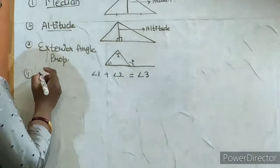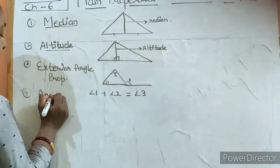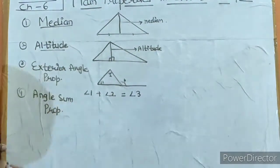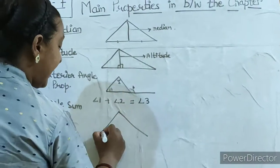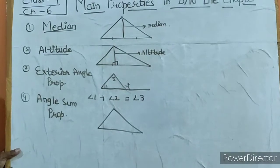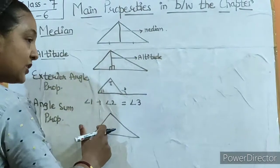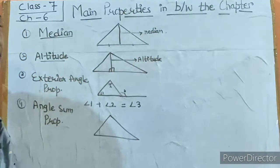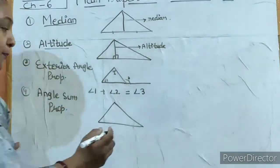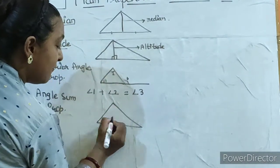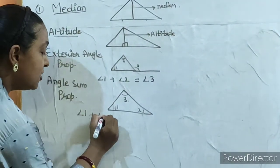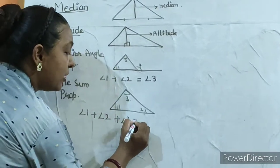The fourth property is the angle sum property of a triangle. The sum of all three angles is equal to 180 degrees. If you have any triangle and you add its three angles, their sum is 180 degrees. Suppose this is angle 1, this is angle 2, and this is angle 3, so angle 1 plus angle 2 plus angle 3 equals 180 degrees.